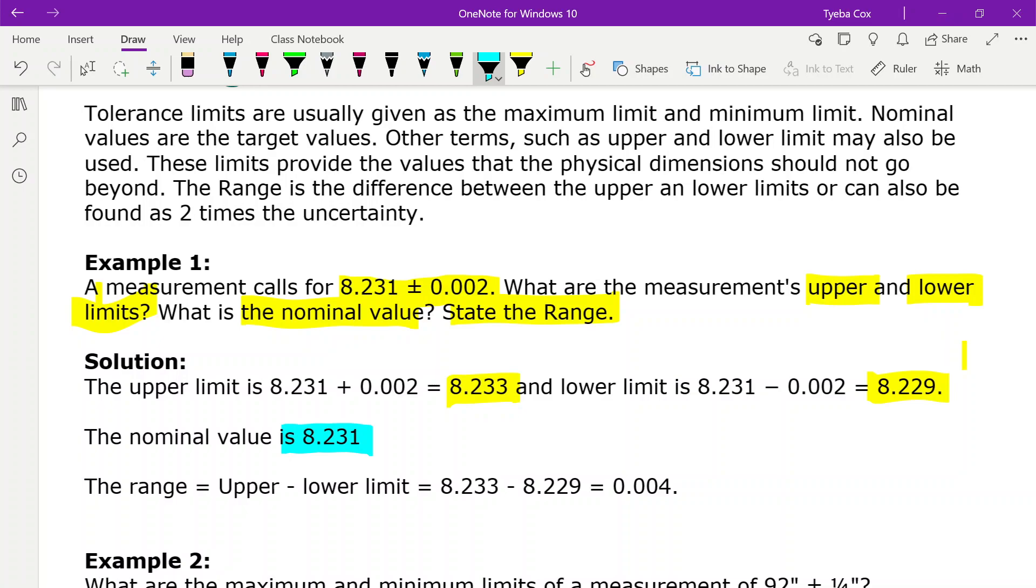And the range, the tolerance range, is going to be the upper minus the lower limit. So we've got those, the max and the min, subtracted and we end up with 0.004. Now if you remember from the previous page, you can also find the range by multiplying your tolerance by 2.